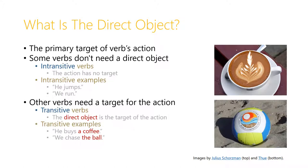Other verbs, though, need a target for the action. We call these transitive verbs. The direct object is the target of the action of these transitive verbs. In English, some transitive examples would include the sentence 'he buys a coffee,' where a coffee is the target of the buying, or 'we chase the ball,' where the ball is the target of the chasing. A coffee and the ball are each the direct object in those clauses.